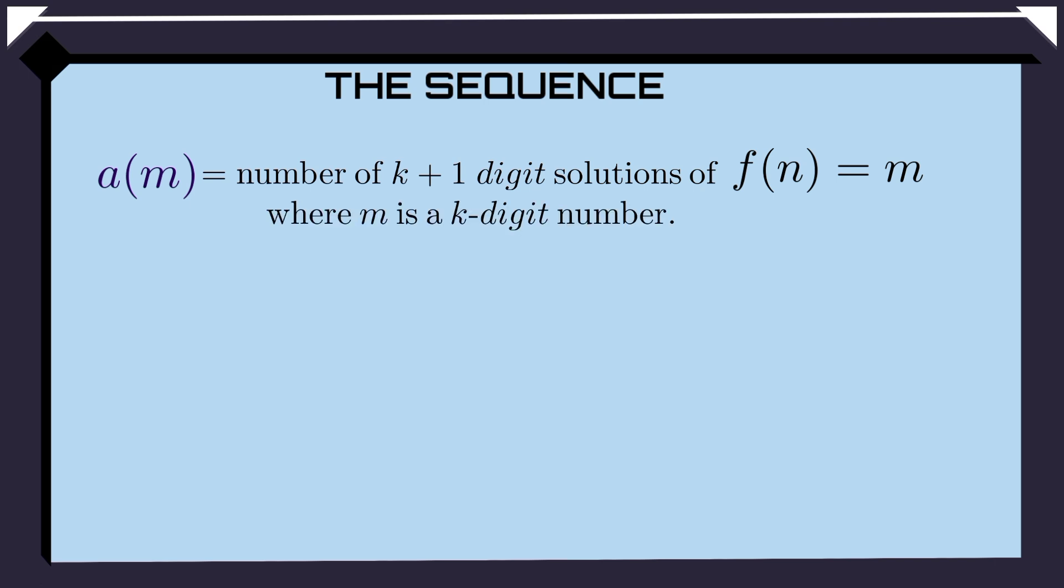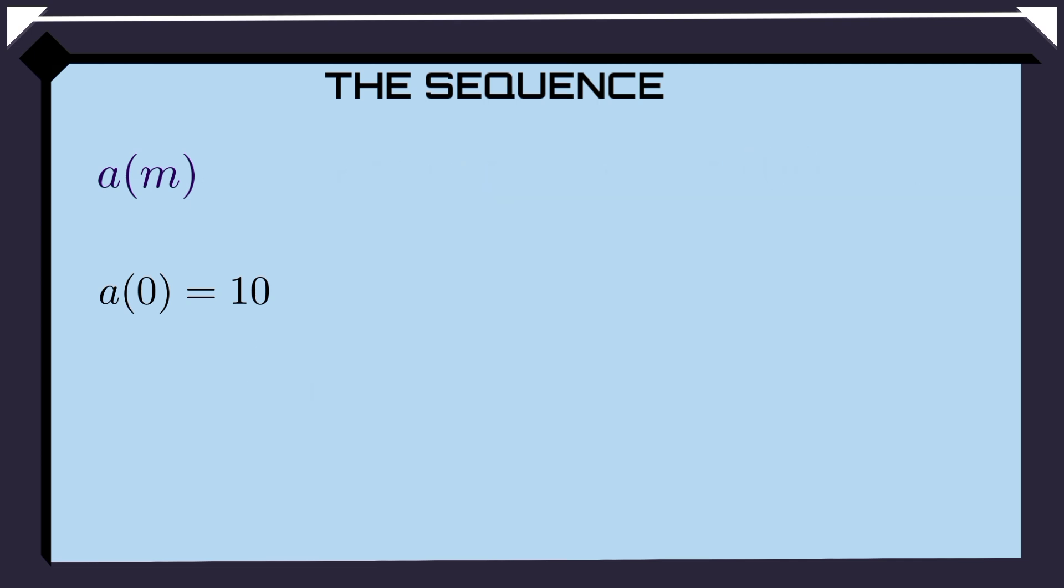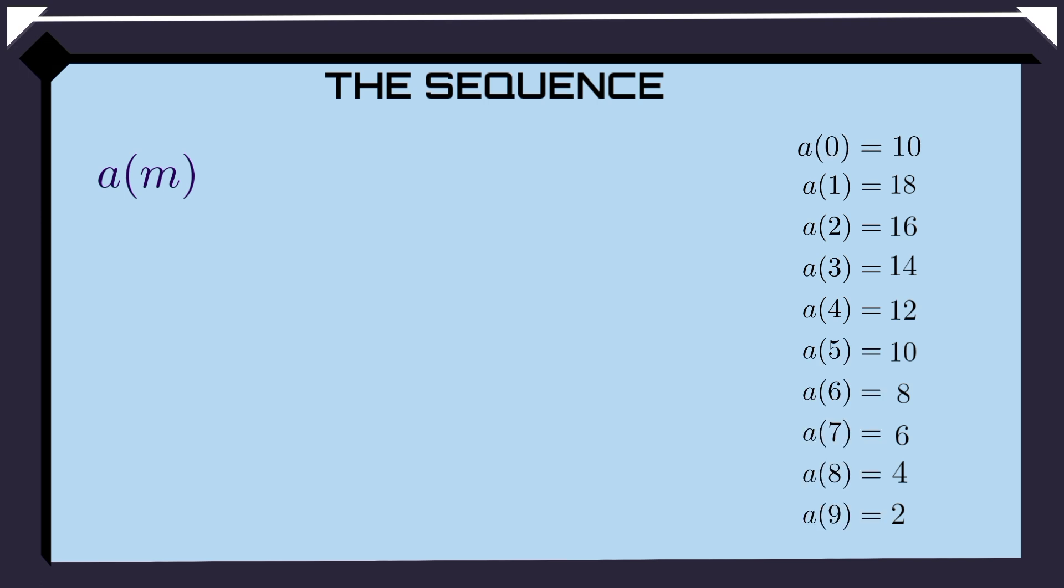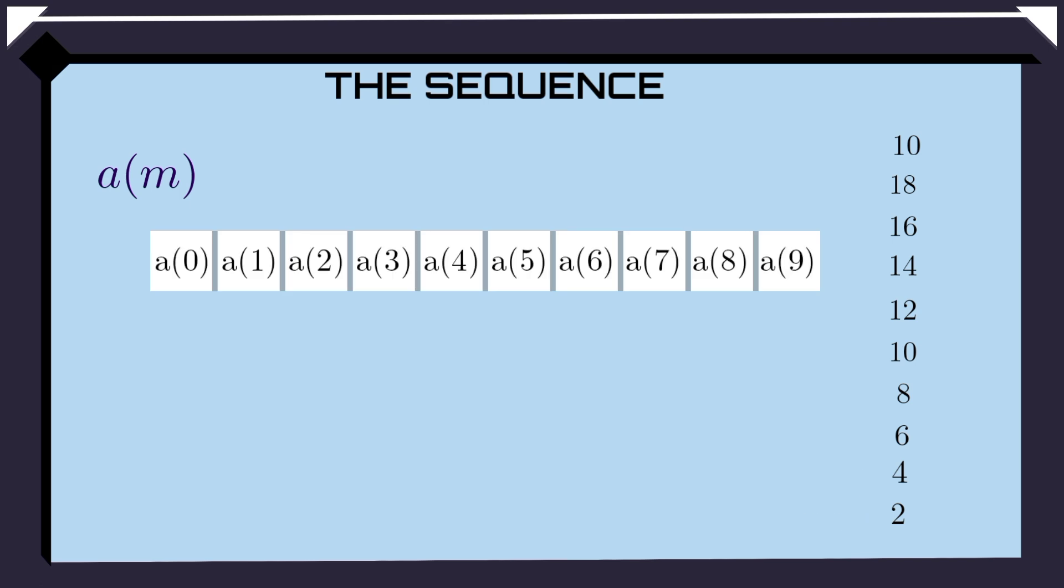We will denote the mth term of the sequence by A(m). If m is a k-digit number, then A(m) is equal to the number of k plus one-digit solutions of the equation F(n) equals m. So, A(0) is 10, because F(n) equals 0 has 10 two-digit solutions. Similarly, we find that A(1) is 18, A(2) is 16, A(3) is 14 and so on up to A(9), which is 2. Let's write these terms like this.